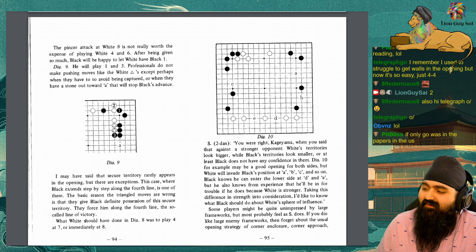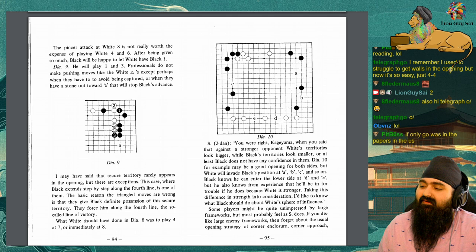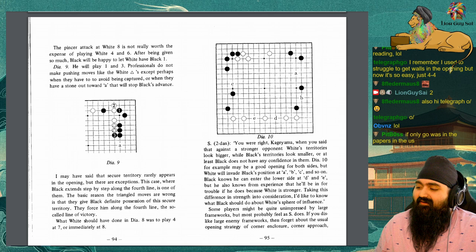Diagram 10, for example, may be a good opening for both sides, but white will invade black's position at A, B, or C, and so on. Black knows he can enter the lower side at D and E, but he also knows from experience that he'll be in for trouble if he does because white is stronger. Taking this difference in strength into consideration, I'd like to know what black should do about white's sphere of influence.